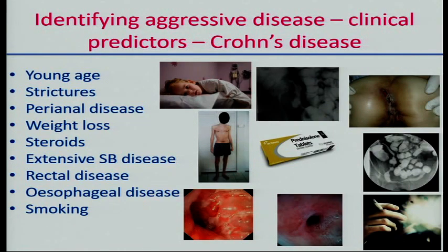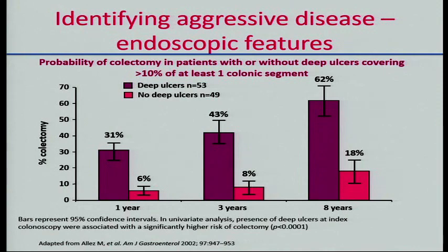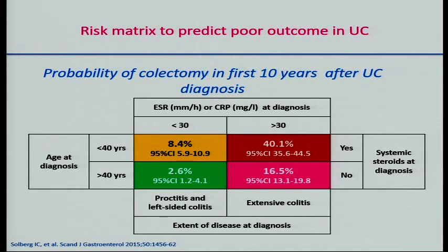Clinical features are useful but not the only things available to us. Endoscopic features can also identify people with poor prognosis disease. Data from Mattia Ale shows that patients with deep ulceration on colonoscopy in Crohn's disease are more likely to end up needing surgery. For ulcerative colitis, we can identify predictors of poor prognosis — using a matrix, for example, showing that people with high inflammatory markers at baseline, presenting at a young age, needing steroids with extensive disease, are more likely to end up with a colectomy. Yet still, we're not terribly good at identifying those patients we need to treat aggressively.